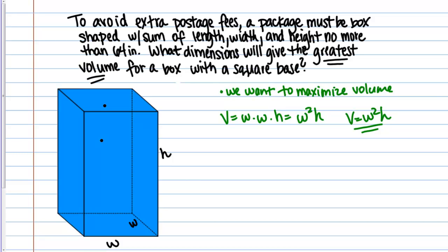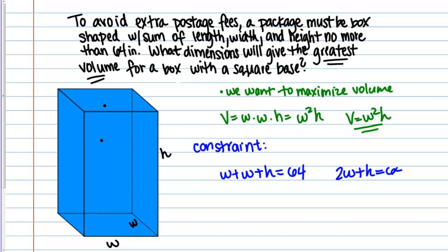The next step is to identify any constraint equations and write those in terms of the variables. The problem says to avoid extra postage fees, we want the sum of length, width, and height to be no more than 64 inches. That's a constraint. We want the volume to be as large as possible, so we want to take full advantage of those 64 inches. So W plus W plus H equals 64, or written as 2W plus H equals 64. Now I have my optimization equation and my constraint equation.